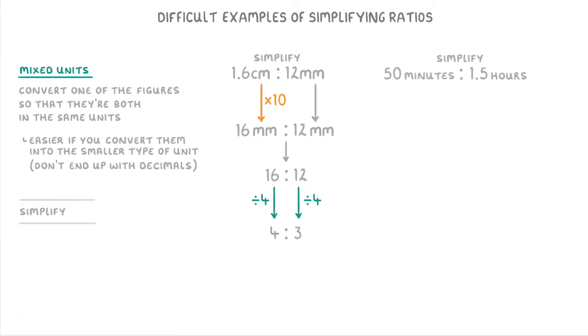Have a go at doing the same thing for this one, where we need to simplify the ratio 50 minutes to 1.5 hours. So the first thing you need to do here is convert them both to the same units. And it'll be easier to convert the hours to minutes. So we multiply our 1.5 hours by 60 to get 90 minutes on the right. But the 50 minutes on the left stays the same.